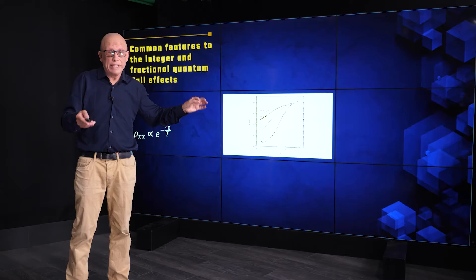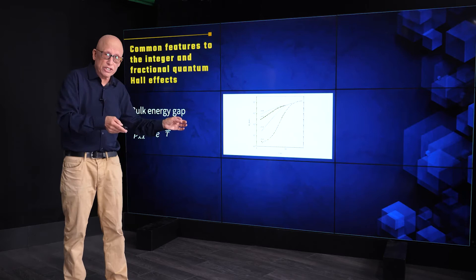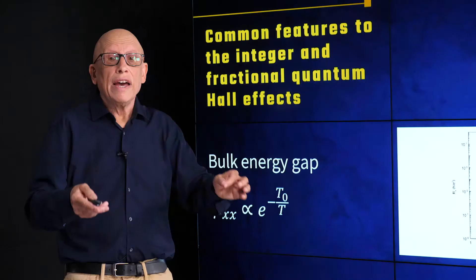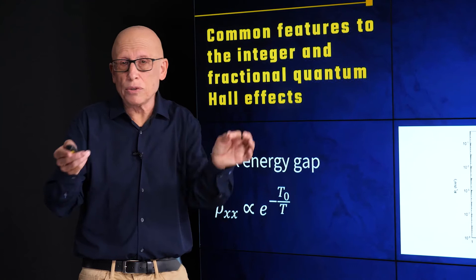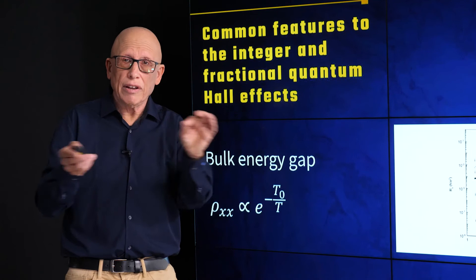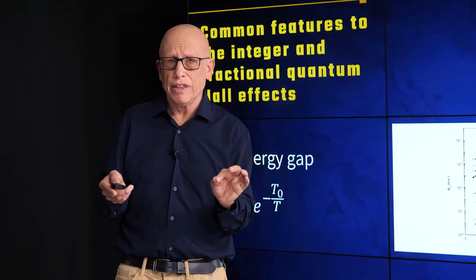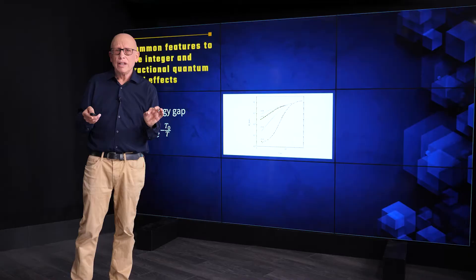So, as we saw, there are integer values of nu, the integer quantum Hall effect, and there are fractional values of nu. Some features are common to both, to any quantum Hall state. Other features are different, very different, for the integer versus the fractional. And I'd like to give examples to both.